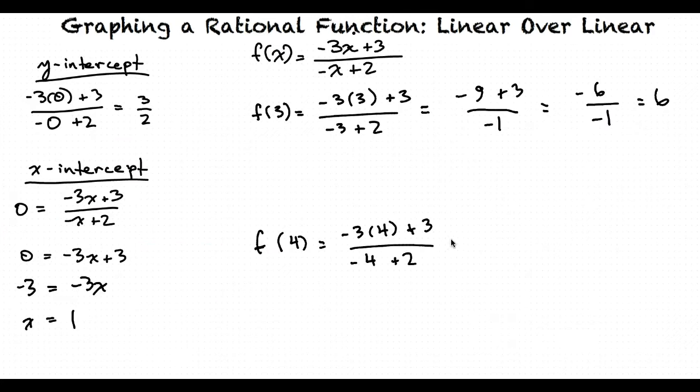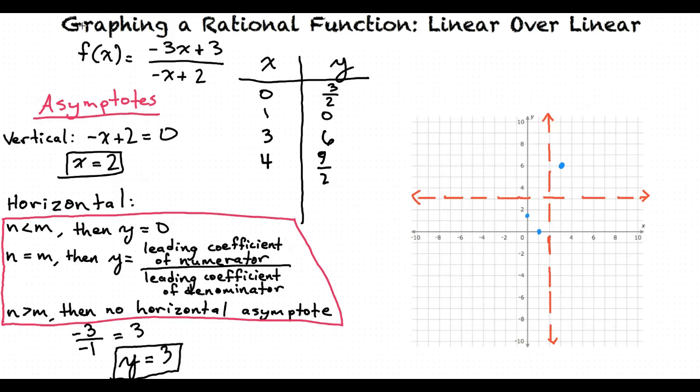Now, if I plug in 4 for x, negative 3 times 4 equals negative 12 plus 3 in the numerator, and then in the denominator, I get negative 4 plus 2, which gives me negative 2. Simplifying that, I get negative 9 over negative 2. So 4 comma 9 halves is another point of the graph, and that is also above the horizontal asymptote.